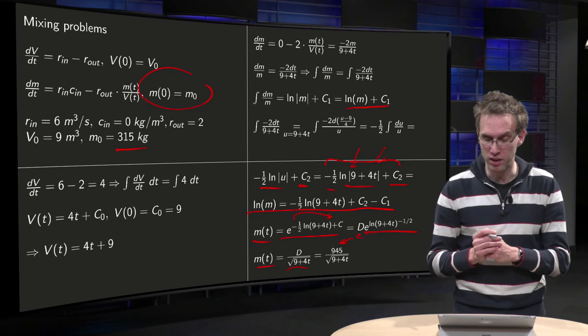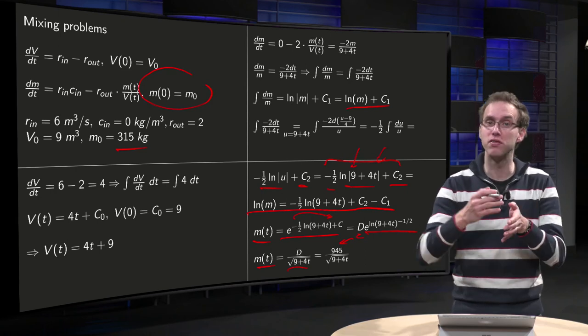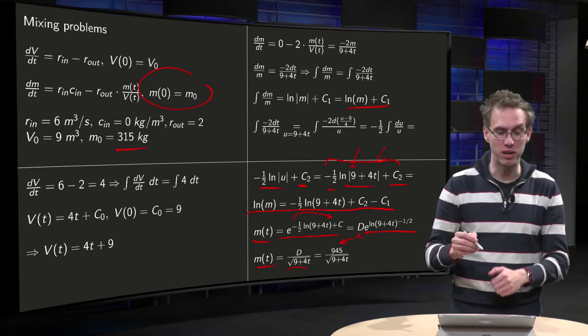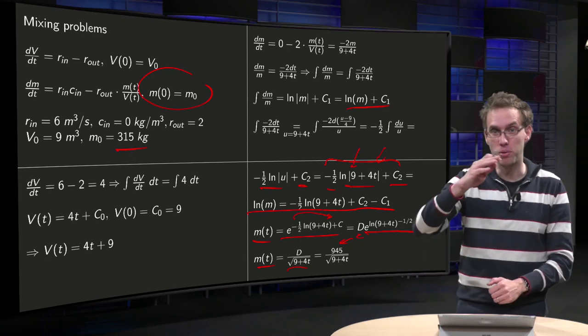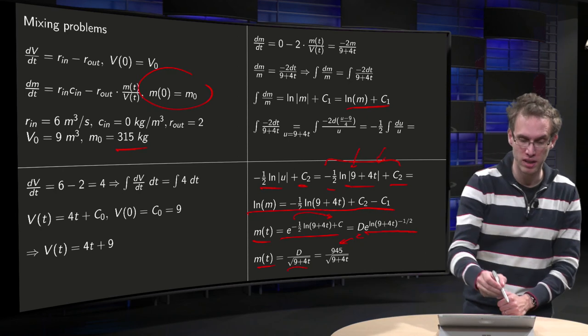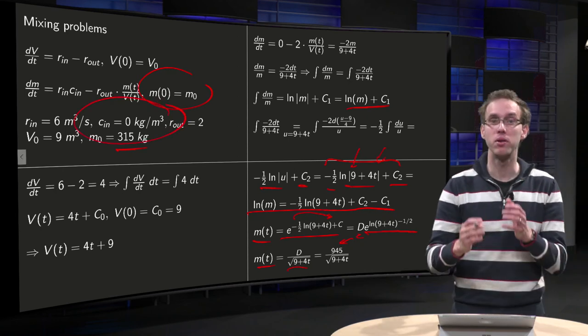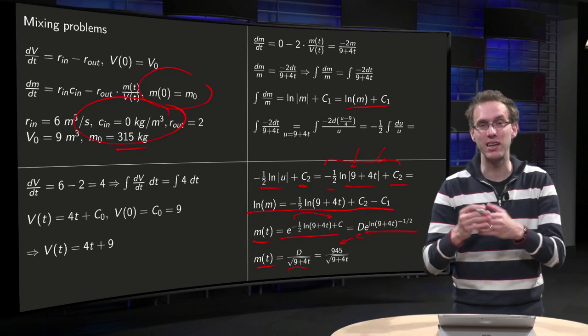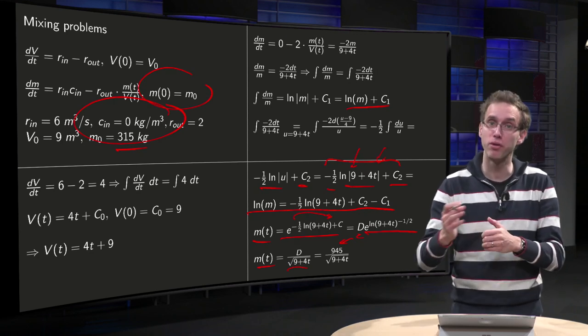So there you have your mass as function of time. You start at 315 kilograms. You see if time increases, your mass decreases, and that makes sense of course, because you lose mass via the outlet, and you do not gain anything, because on your inlet you have pure water. So we will also understand how our solution behaves from a physical viewpoint.